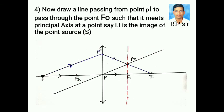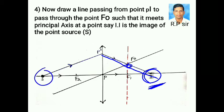Last, we have to draw a line from P dash towards principal axis through F0. Here, this line intersects the principal axis at I. Now, this I is the image of point source S.